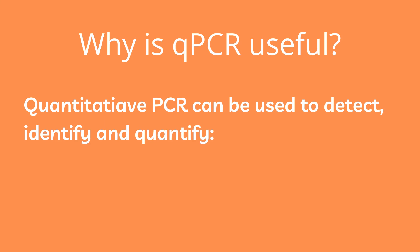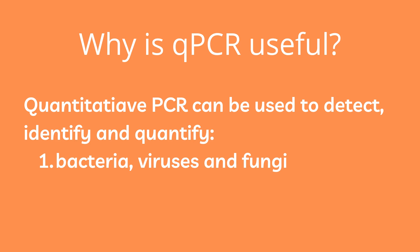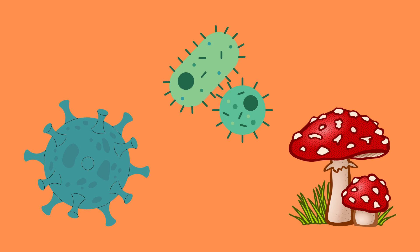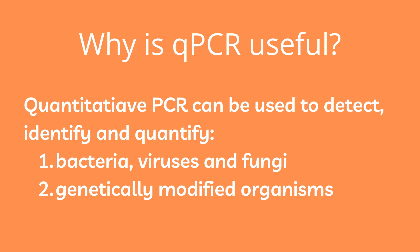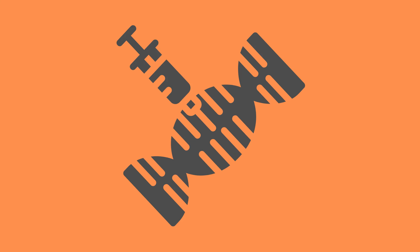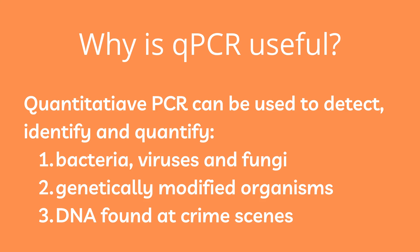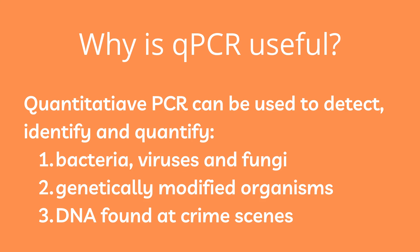How is qPCR currently used? Quantitative PCR is used to detect, identify, and quantify microorganisms that cause diseases such as bacteria, viruses, and fungi. The lab tests for COVID-19 were usually carried out by PCR and qPCR, for instance. It can also be used to detect and quantify genetically modified organisms. In addition, PCR is often used in forensic research to amplify pieces of DNA found at a crime scene to identify the culprit. These are just a few of the many uses of qPCR.